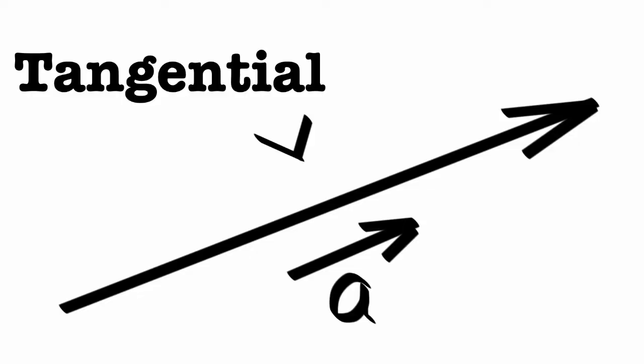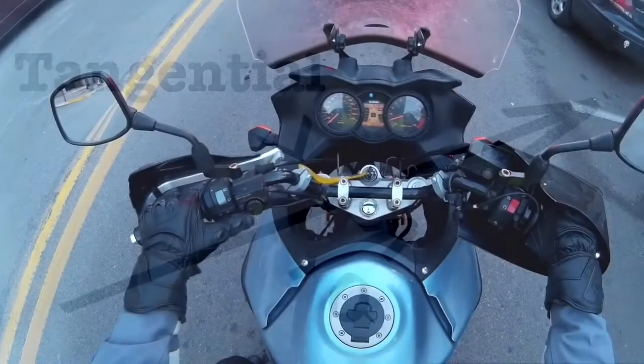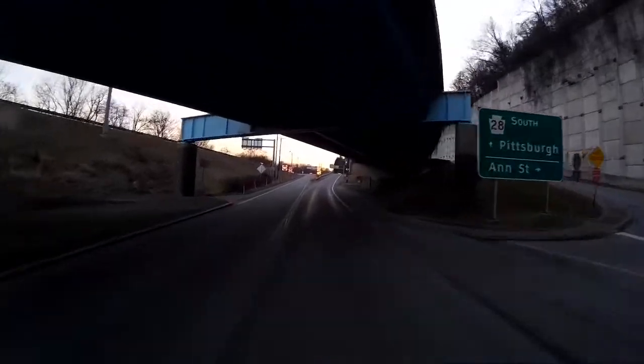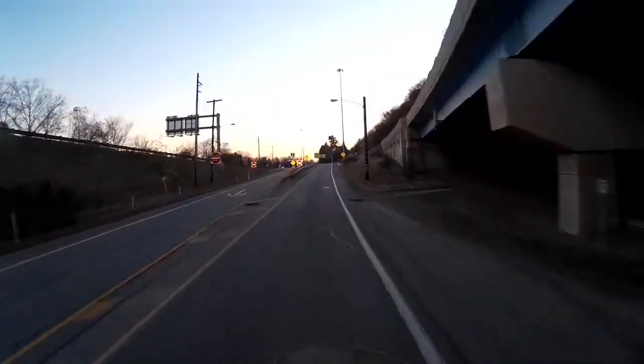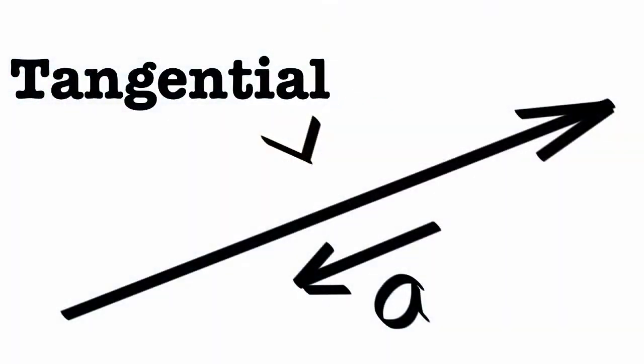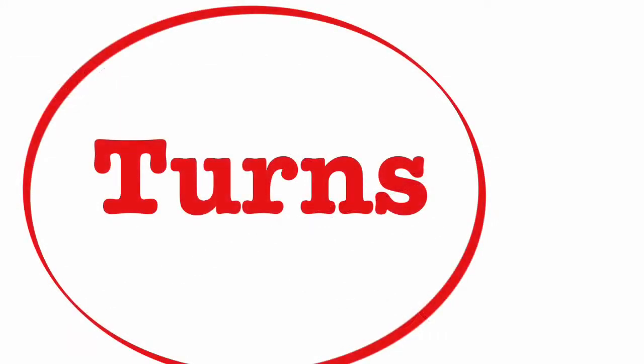Now let's say you speed up — that's going to be a tangential acceleration. Tangential velocity is straight ahead and you're speeding up, so the acceleration is straight ahead. If you're slowing down, that's a straight-ahead tangential velocity and a backward acceleration. Both are called tangential, because now we have to talk about turns.